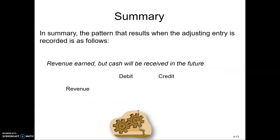Let's go over these four adjusting entries. For accrued revenue, the revenue has been earned, so we credit revenue. The cash will be received in the future — we did the work this period and won't collect until next period — so the customer owes us at the end of the period. We debit accounts receivable for accrued revenue.